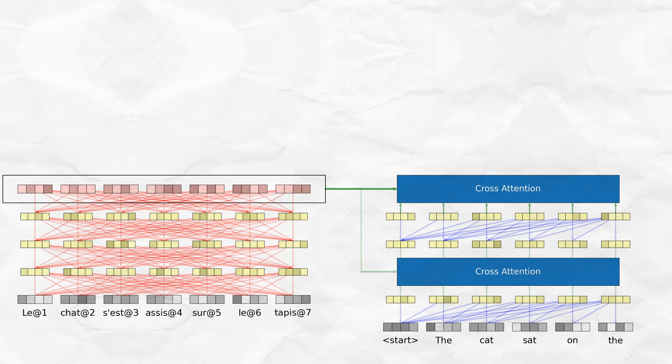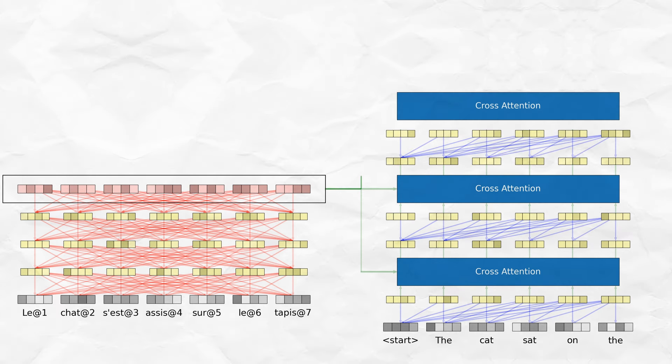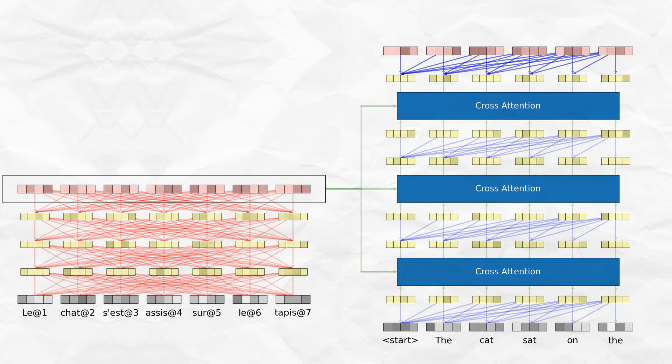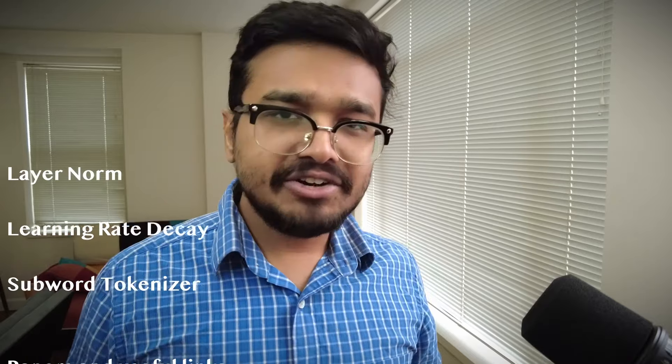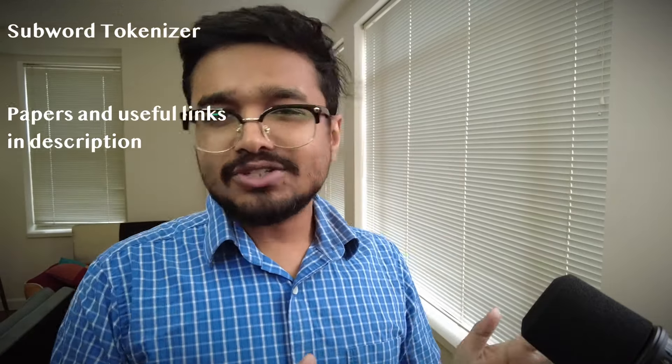The transformer decoder is a series of causal masked attention followed by encoder-decoder attention, continuously contextualizing each input token with its past tokens and combining this with the encoder's embeddings. There are also other optimizations like layer normalization, learning rate decay, and subword tokenization.